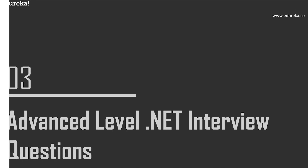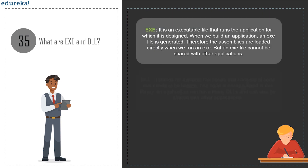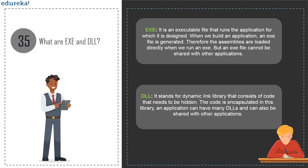Now let's move on to advanced level interview questions. Question 35: what are EXE and DLL in .NET? Both are assembly executable modules. An EXE is an executable file that runs the application it is designed for — when we build an application, the EXE file is generated, assemblies are loaded directly, but an EXE cannot be shared with other applications. A DLL (Dynamic Link Library) consists of code that needs to be hidden/encapsulated in a library. An application can have many DLLs and they can be shared with other applications.